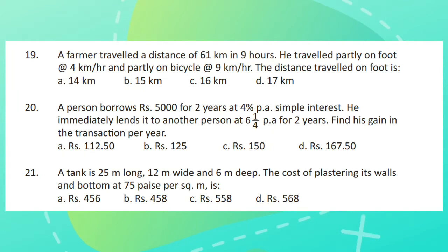Question 19. A farmer travelled a distance of 61 km in 9 hours. He travelled partly on foot at 4 km an hour and partly on bicycle at 9 km an hour. The distance travelled on foot is?